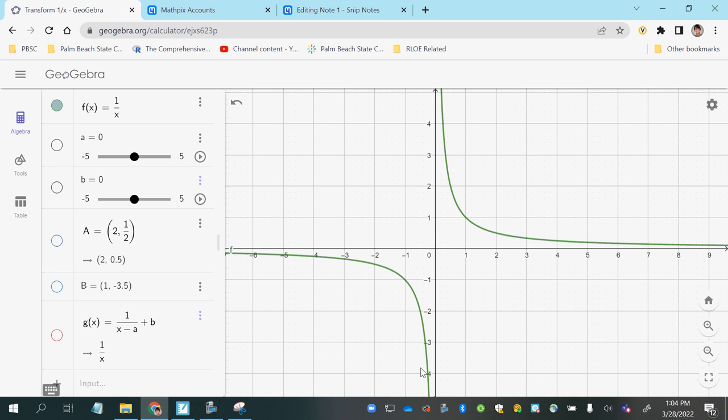And now we want to transform it or specifically translate it by shifting it to the left 1 unit and down 4 units.